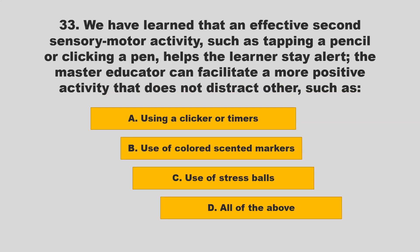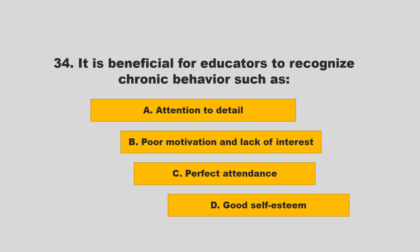We have learned that an effective secondary sensory motor activity such as tapping a pencil or clicking a pen helps the learner stay alert. The master educator can facilitate a more positive activity that does not distract others such as: A) using a clicker or timers; B) use of colors; C) use of colored scented markers; D) use of stress balls; or all of the above. If you chose D — all of the above — you are correct.